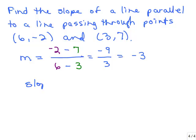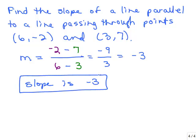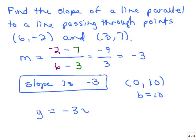So that would be our answer: the slope is negative 3. Now what if you were also given that the line passes through the point 0, 10? That's the y-intercept, so b is 10. If asked to write the equation of a line parallel to the line through 6, negative 2 and 3, 7 that passes through 0, 10, you could say the equation is y equals negative 3x plus 10, since you know the slope and what b is. So you can see there are a lot of different questions somebody could ask you about parallel lines.